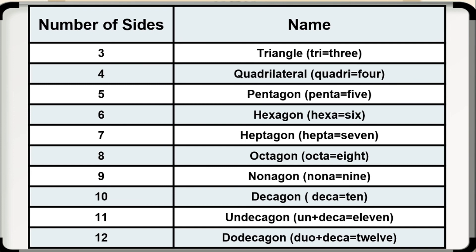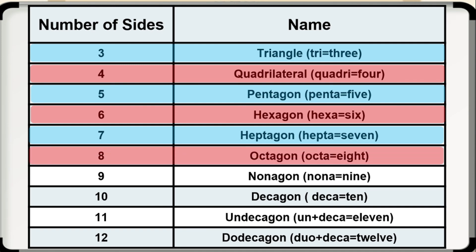Polygons are named according to the number of sides. When we have three sides, we have a triangle — tri means three. When we have four sides, we have a quadrilateral — quadri means four. Five-sided polygons are called pentagon — penta means five. Six-sided polygons are called hexagon — hexa means six. Seven-sided polygons are called heptagon — hepta means seven. Eight-sided polygons are called octagon — octa means eight. Nine-sided polygons are called nonagon — nona means nine. Ten-sided polygons are called decagon. Eleven-sided polygons are called undecagon. Twelve-sided polygons are called dodecagon.